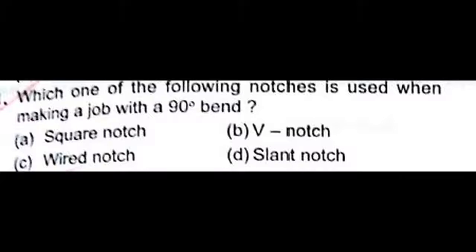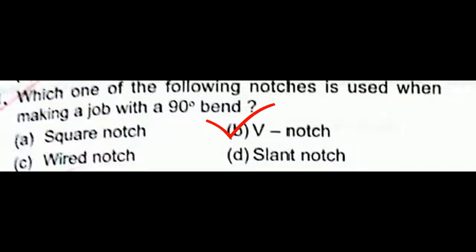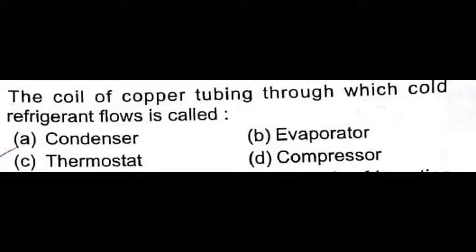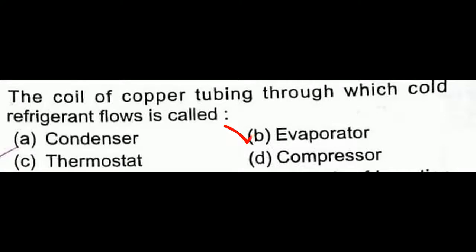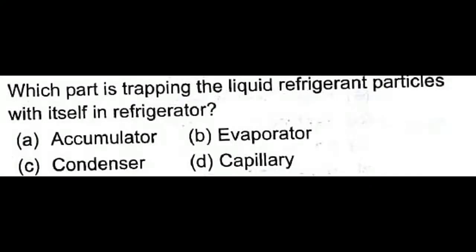Which notch is used when making a job with a 90-degree bend? We use a V-notch when bending a 90-degree bend job. The coil of copper tubing through which the cold refrigerant flows is called an evaporator — not condenser, thermostat, or compressor. Always remember this is the evaporator.